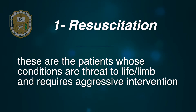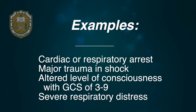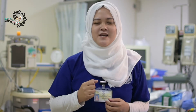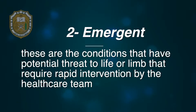Category 1 is the resuscitation level. These are patients whose conditions are a threat to life or limb and require aggressive intervention. Examples include cardiac or respiratory arrest, major trauma in shock, altered level of consciousness with GCS of 3 to 9, and severe respiratory distress. These patients are directly sent to the ER to be attended by a doctor and a team of nurses.